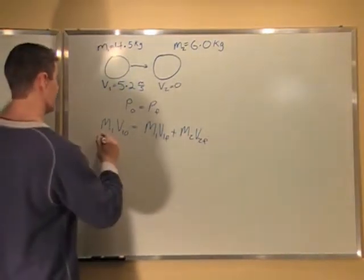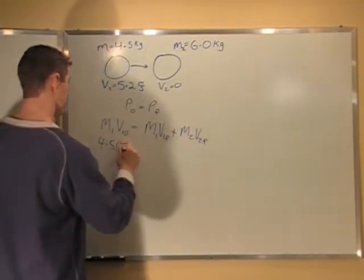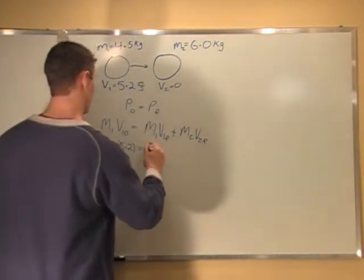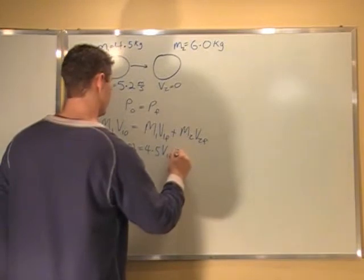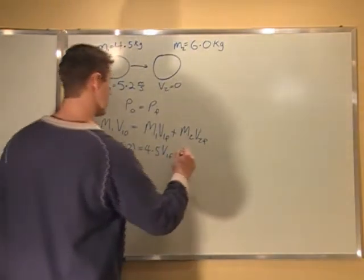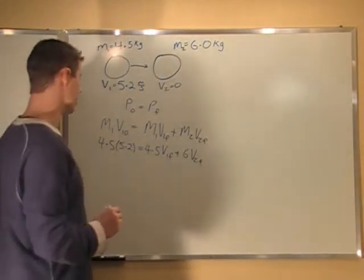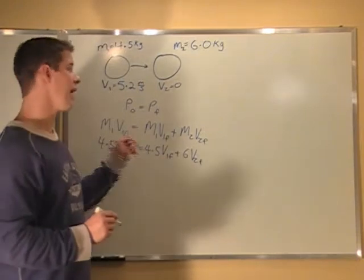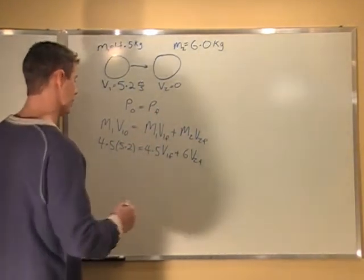So I'm just going to plug in some numbers here. We've got 4.5 times 5.2 equals 4.5 V1 final plus 6 V2 final. And so what I'm going to do is I'm just going to solve for V1 final because I'm going to have two equations and two unknowns, so I'm just going to solve for V1 final now in terms of everything else.